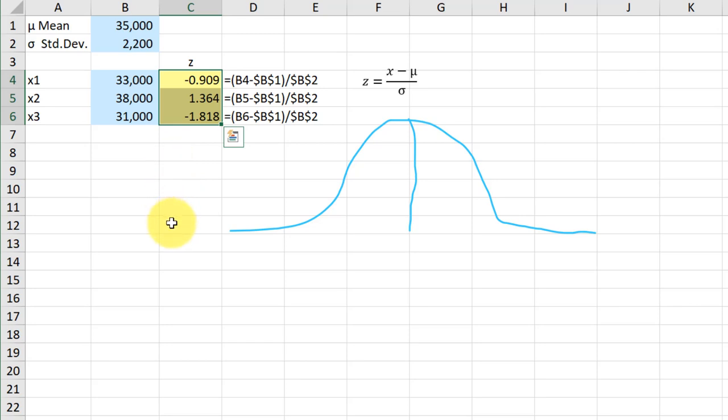I always recommend my students draw a curve. The middle would be the mean of 35,000, and the first X value is 33,000, so that's somewhere in here. Then we've got 38,000, that's somewhere over here, so that would be a positive Z score since it's above the mean. 33,000 would be a negative, which is below the mean, and then 31,000 is over here, which is also going to be a negative Z score because that's below the mean.